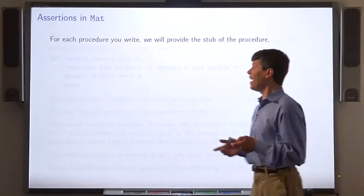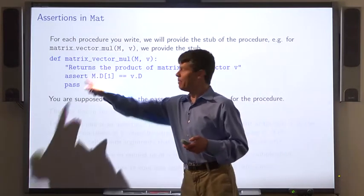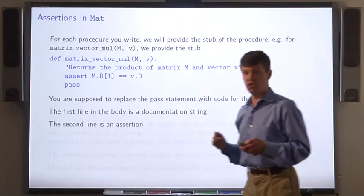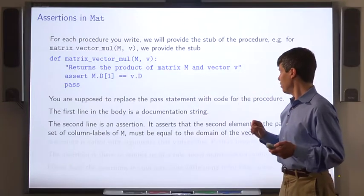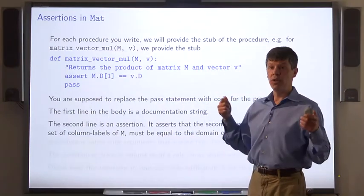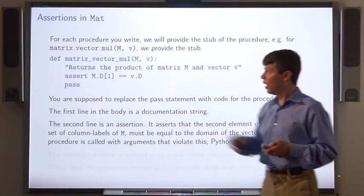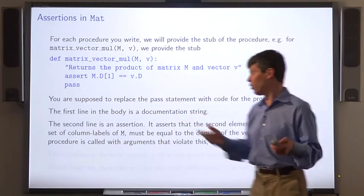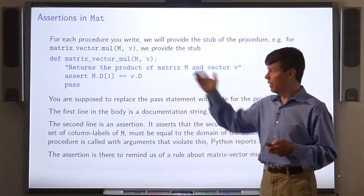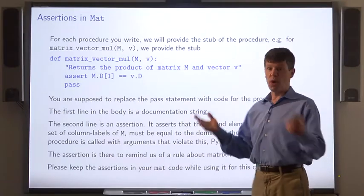For each procedure, just as in VEC, we'll provide the stub. As before, you're going to replace the pass statement with the appropriate lines of code. As before, the first line is a documentation string. The second line is an assertion. In this case, it asserts that the second element of the D field of M has to be a set that's equal to the domain of the vector V. If this assertion is violated by the arguments, Python will report an error. So this assertion is there to remind us of a rule about, in this case, matrix-vector multiplication. So please keep the assertions in your code when writing code for this class.